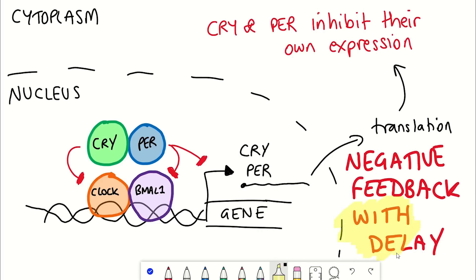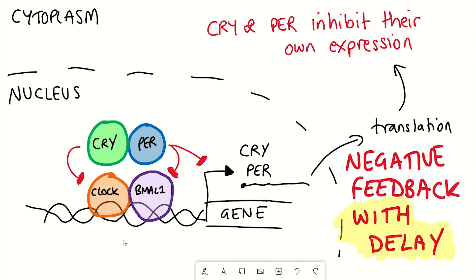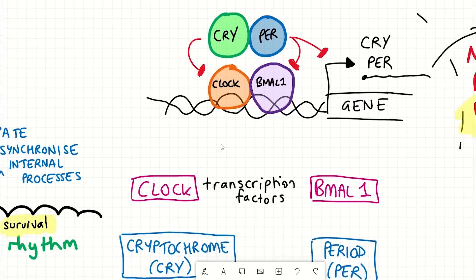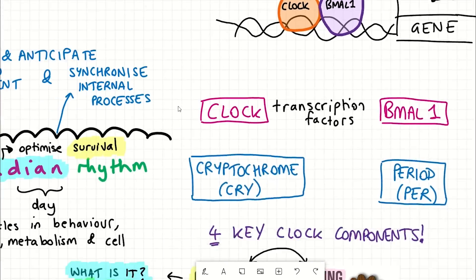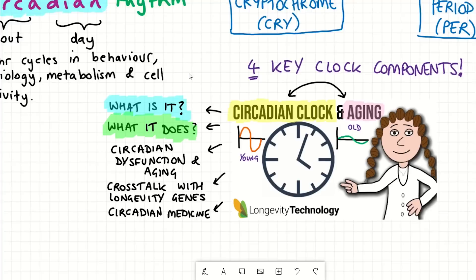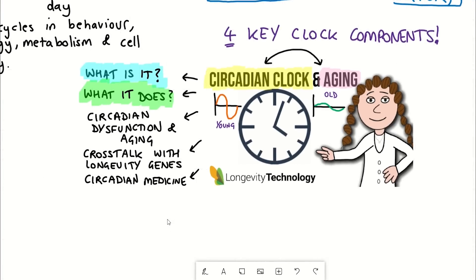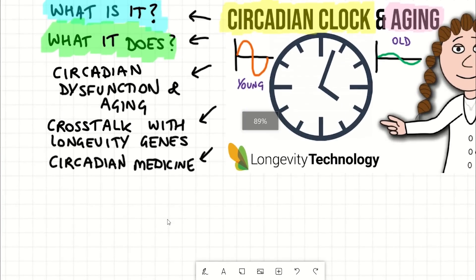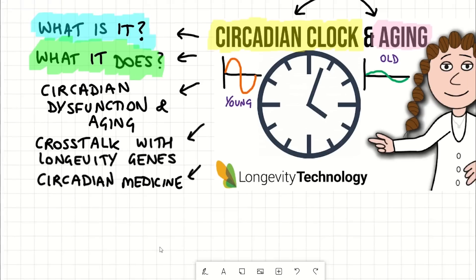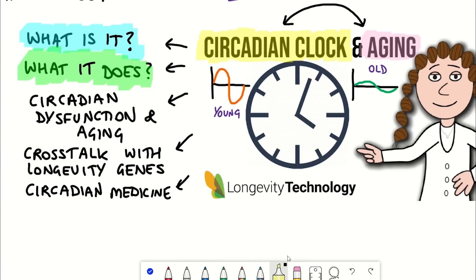The timing of this negative feedback loop enables the 24-hour cycle to occur. It is a bit more complicated than that, but it should be enough to follow the rest of the video and understand how the circadian rhythm is connected to aging.